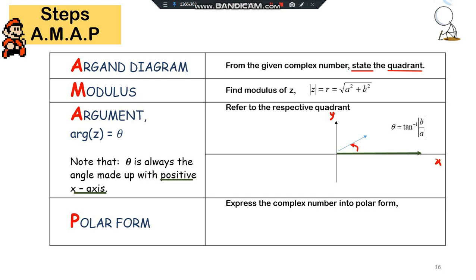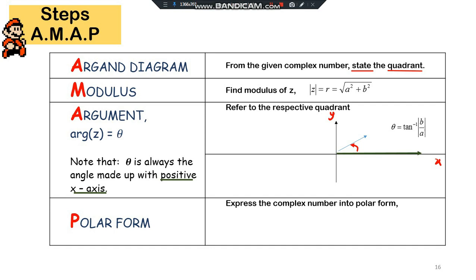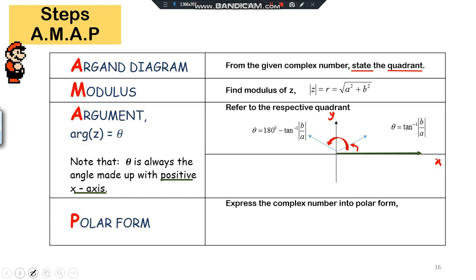A is for argument — the angle made with the positive x-axis. The positive x-axis is always to the right. So theta is always the angle made with the positive x-axis, meaning theta = arctan(|b/a|), where the vertical part y is the imaginary component and x is the real component.